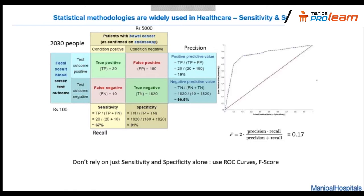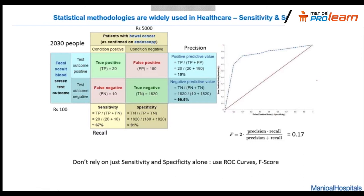Another way of evaluating a test is the receiver operating characteristic (ROC) curve, where you plot the true positive rate against the false positive rate. The diagonal line represents a 50% random guess, and you can plot performance across various sensitivity and specificity thresholds to determine whether your test is better than random or compare it to other algorithms.